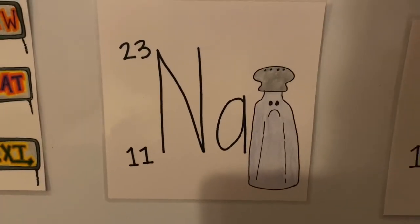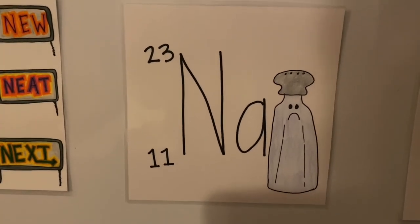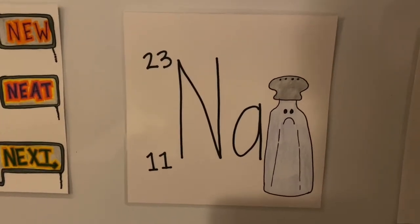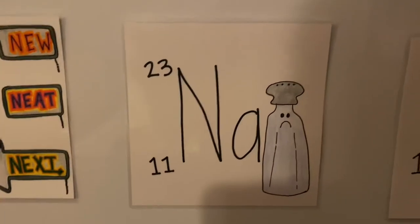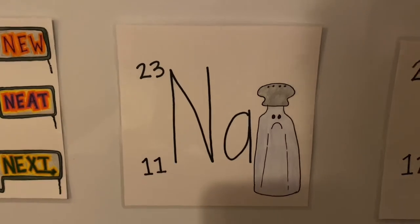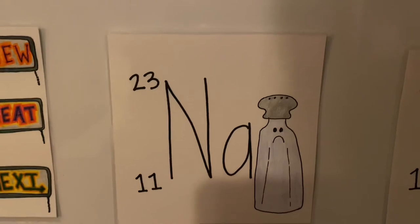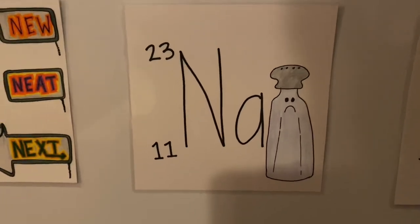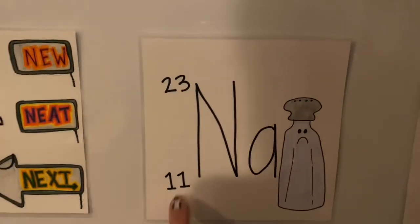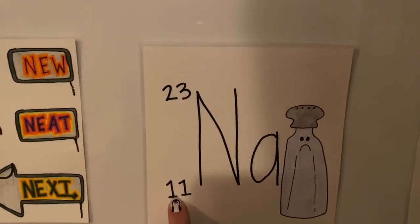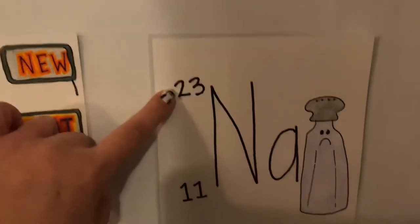This might be my second favorite one. N-A stands for sodium. Do you know what has sodium in it? Salt. So somebody says, hey, do you want some sodium? And you answer, nah. And look, the little salt shaker is so sad because you don't want any sodium. You want sodium? Nah. The atomic number is 11. This is odd. So we're going to multiply it by 2, which is 22 plus 1 is 23.